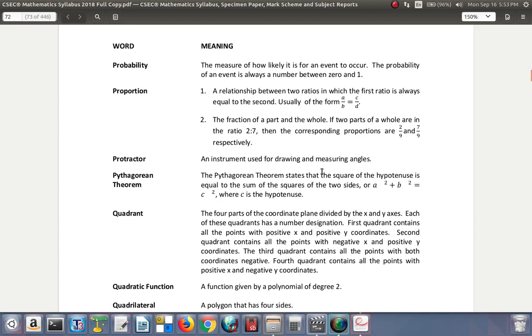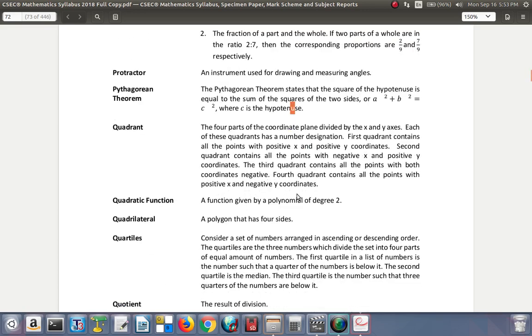Protractor. An instrument used for drawing and measuring angles. Pythagorean Theorem. The Pythagorean theorem states that the square on the hypotenuse is equal to the sum of the squares on the other two sides. Or A squared plus B squared is equal to C squared where C is the hypotenuse. So you know that that would have to be a right-angled triangle.